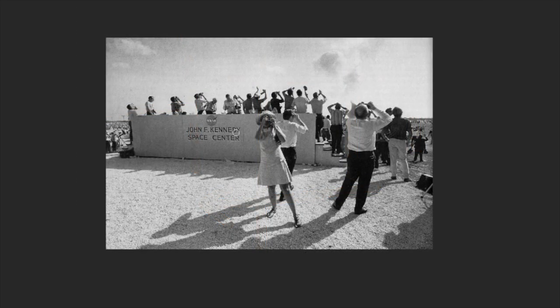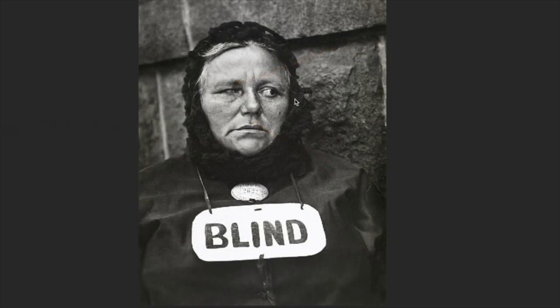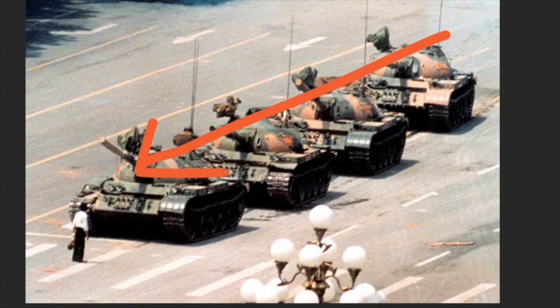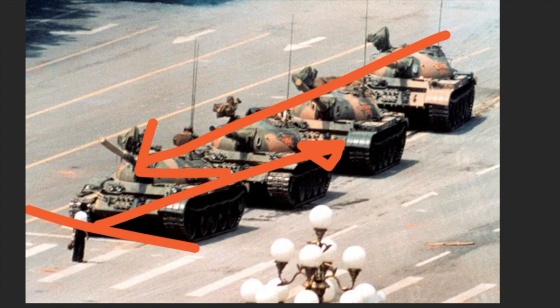Gary Winogrand would often use implied line in his photographs and he often combines it with humor. In this case you've got a direction — everyone looking up at the sky at the Kennedy Space Center — and this woman for whatever reason pointing the camera in the opposite direction, so you've got two implied directions within this photograph. Here again in Paul Strand's photograph there's a combination of leading line and humor. This famous photograph from Tiananmen Square has real implied direction and confrontation — this man is almost forming a block against the tanks, so you have two implied directions in opposition.